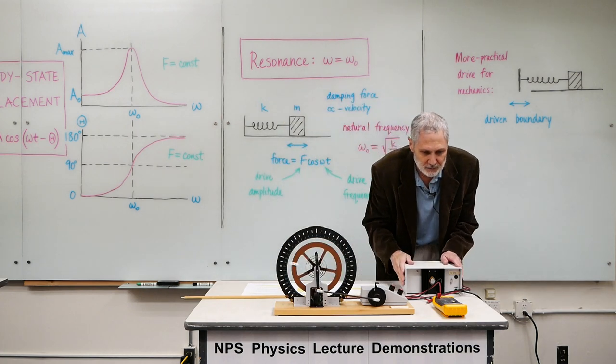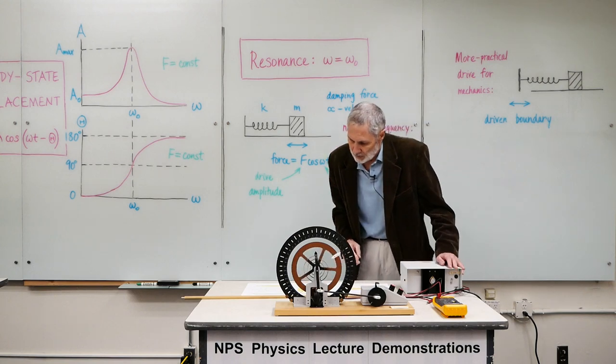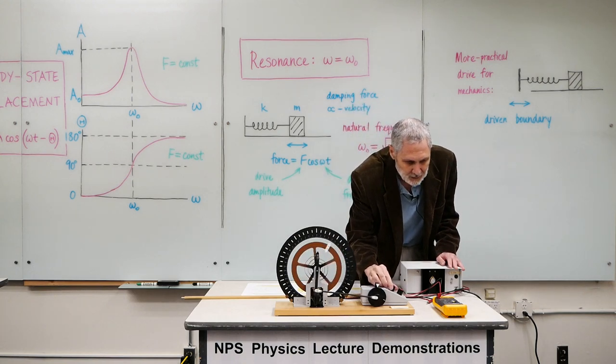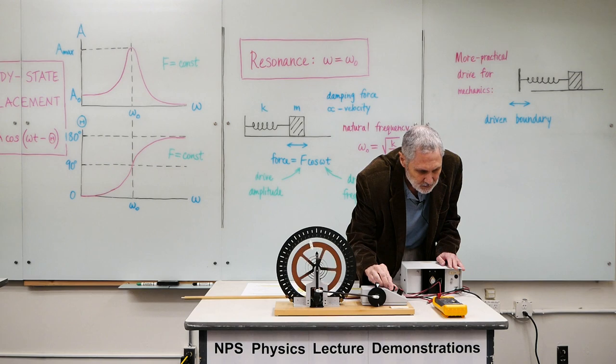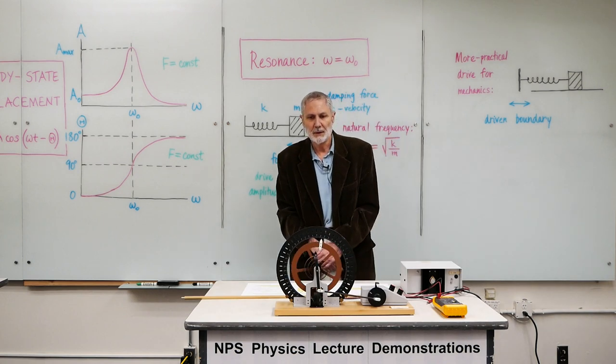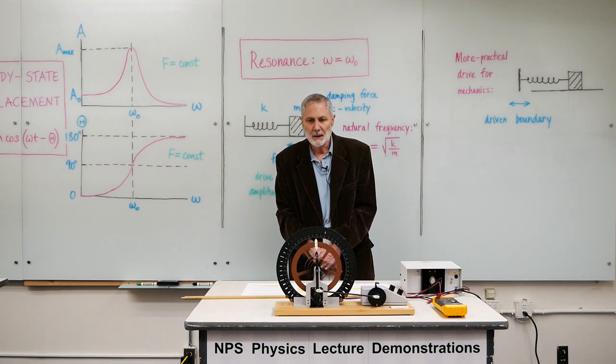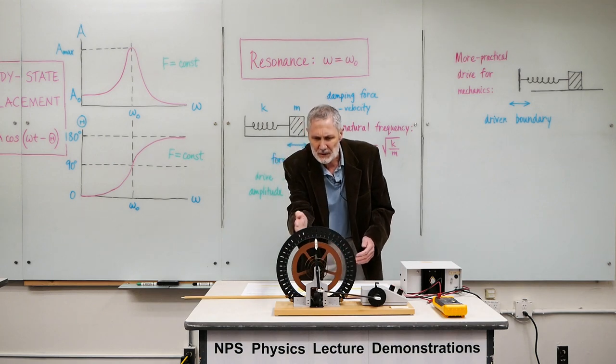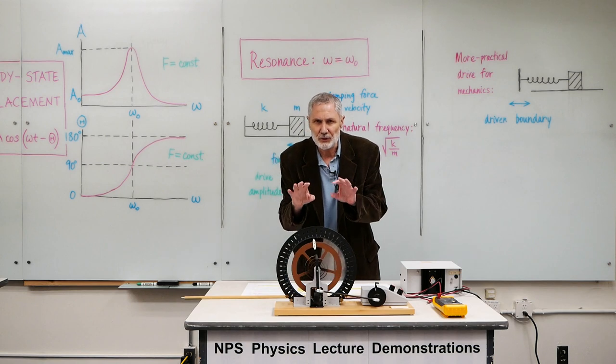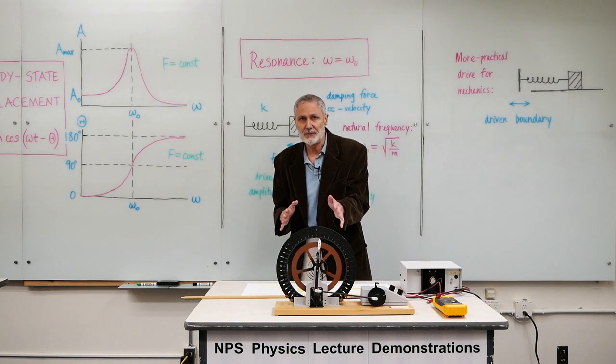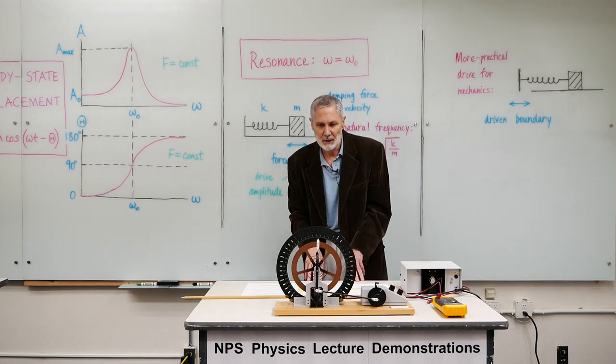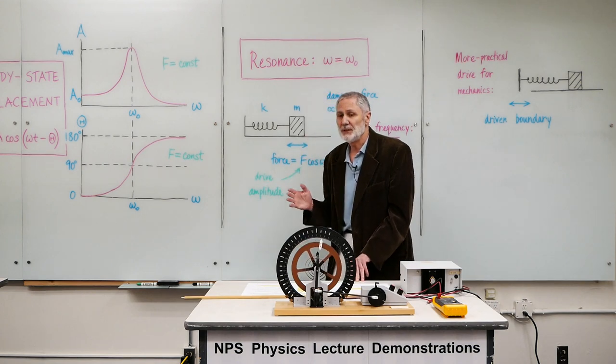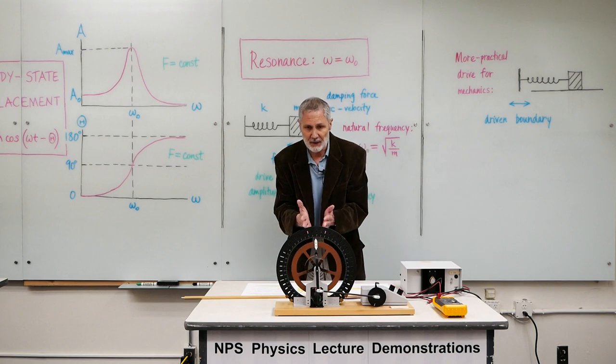So this is called the resonance regime. It's also called the dissipation-controlled regime because dissipation is controlling what that amplitude is. If you zero out the damping again, it goes to infinity. All right, so now I'm going to abruptly change the frequency to a much lower value. And you'll see that it's going back and forth more slowly now.